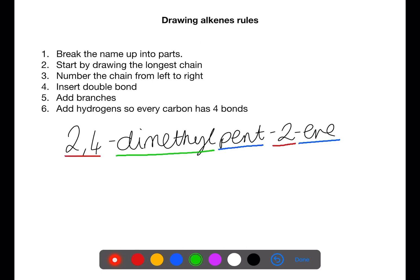You can then number the chain from left to right and insert the double bond starting at the carbon number indicated in the name. For this example, we have five carbons for pentene. The double bond starts on the second carbon. So we'll put in the double bond between carbons 2 and 3.